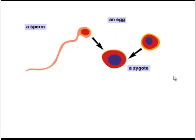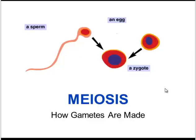In our unit on reproduction, we learned that during sexual reproduction, a sperm and an egg fuse to form a zygote. But where does the sperm and the egg come from? How does the male and female reproductive system produce these specialized cells with only half of the chromosomes? To understand that, we're going to explore the process of meiosis, which is a type of cell division that produces gametes.